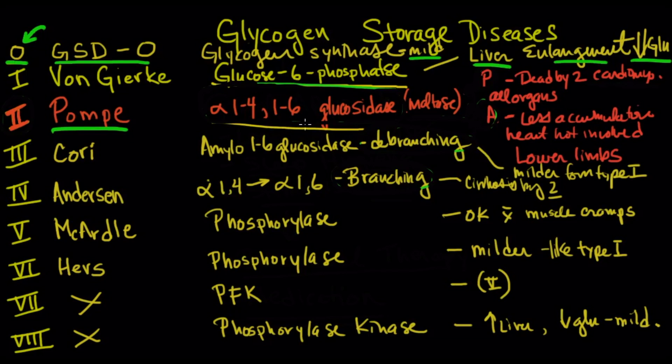Pompe's disease, which I have here in red, is a problem with maltase and it's an alpha-1,4, alpha-1,6 glucosidase. And the key to remember with this is it is number two and there are two types. There's a pediatric and there's an adult type. The pediatric is pretty severe and they're usually dead by two from cardiomyopathy. And all organs are affected because of this.